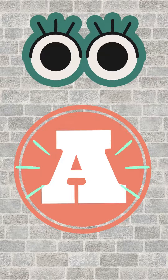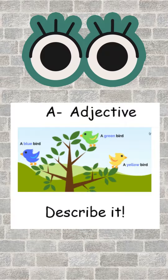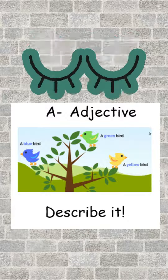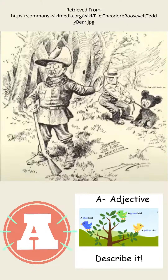The first part of this strategy is A. A is adjective — describe it. When students are looking at this political cartoon, they may say things like: I see a man, I see a bear, I see the woods.